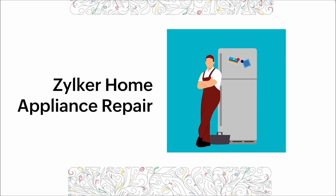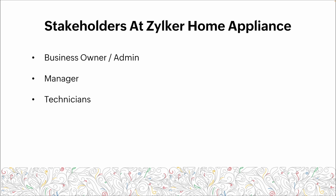So, Zilker Home Appliance Repair. Within the company we have three different levels of stakeholders. Our top tier, our top role, is our business owner, who also in this case is serving as our admin. Next we have our mid-tier, our managers, and last we have our technicians, who are going to be the main group of users within the solution.